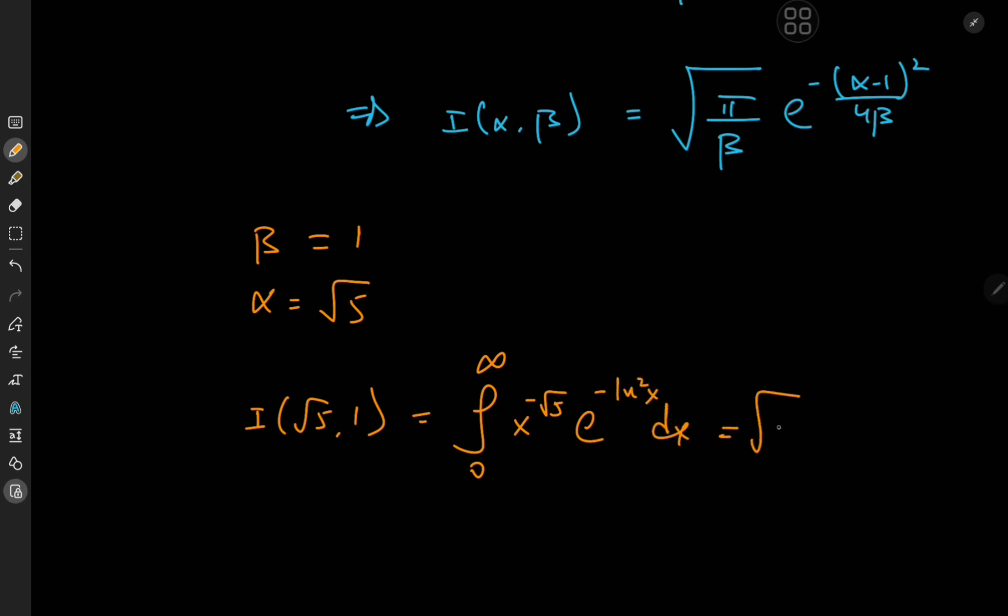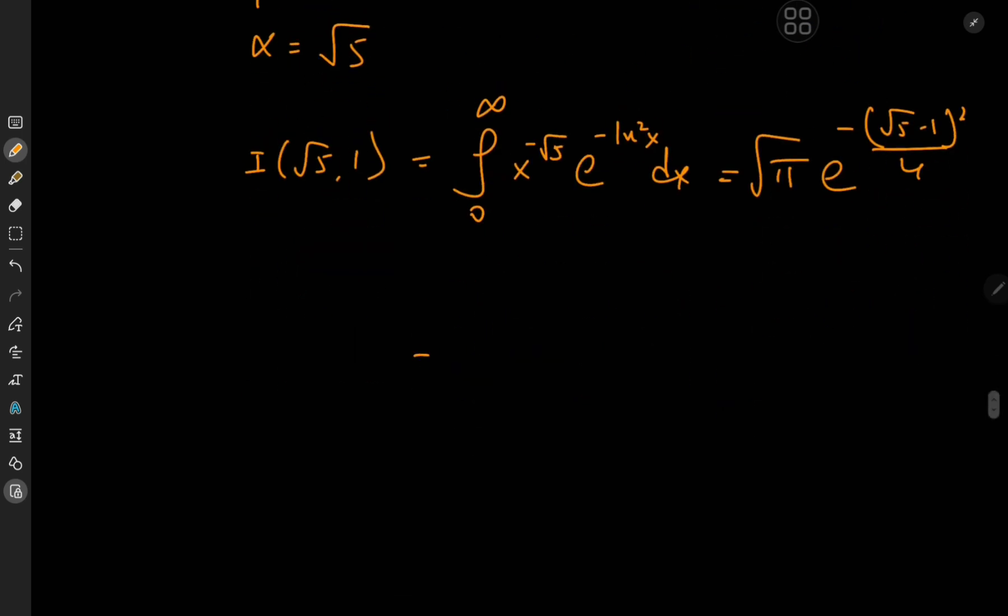This thing would be equal to root pi divided by 1 is just root pi. Then we have e to the negative root 5 minus 1 squared divided by 4. And we could just write this as e to the negative root 5 minus 1 divided by 2 squared times root pi.